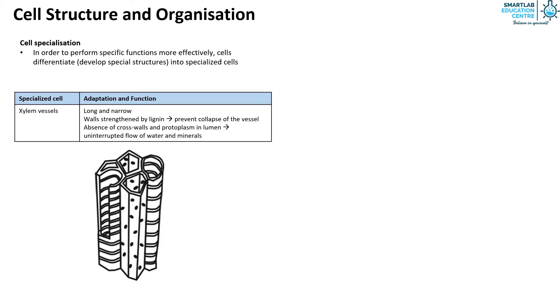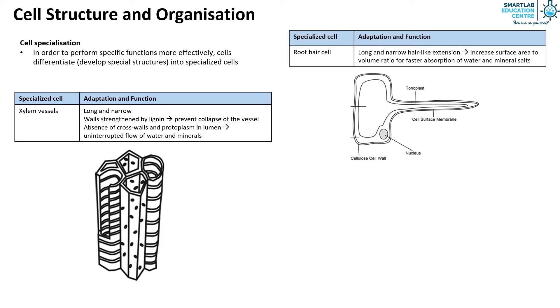The second specialized cell is the root hair cell. It is long and has a narrow hair-like extension which increases surface area to volume ratio for faster absorption of water and mineral salts.